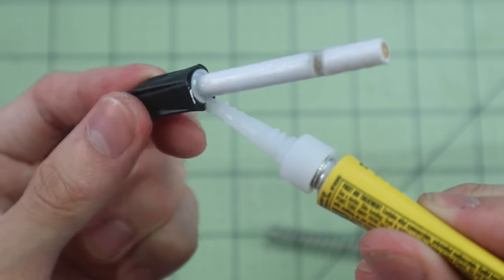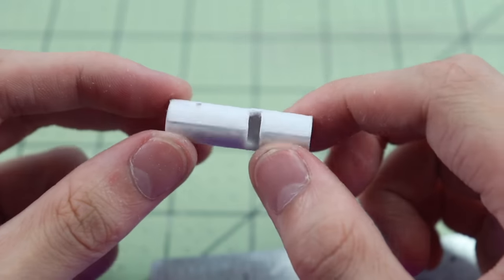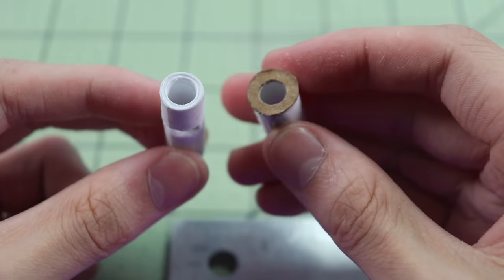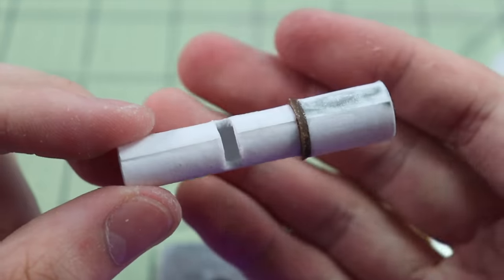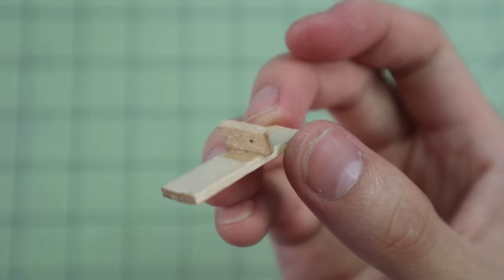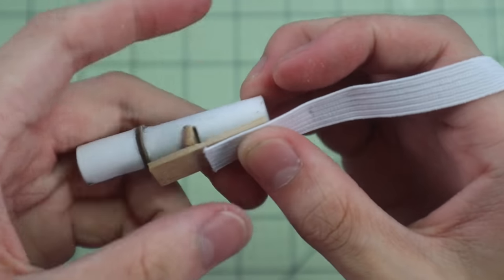After that, I glued the spring to the dart like this. This paper tube right here should have the same inner diameter as the hole on the brown ring.